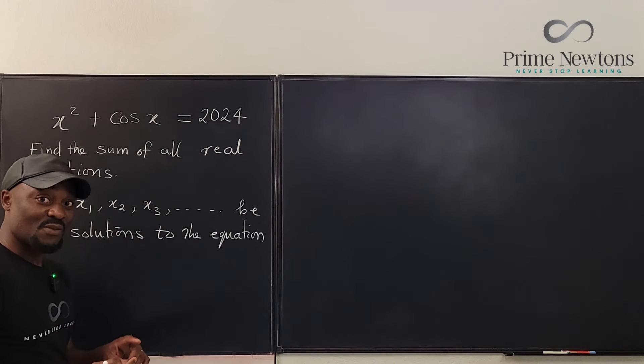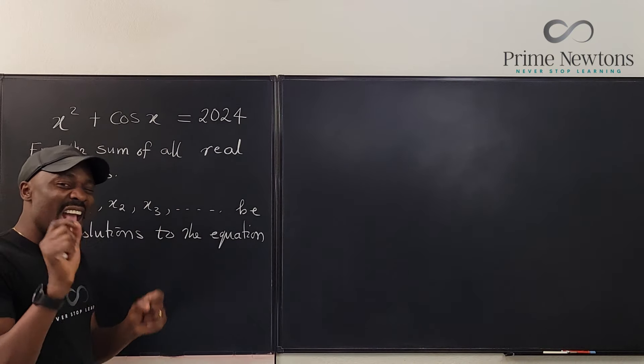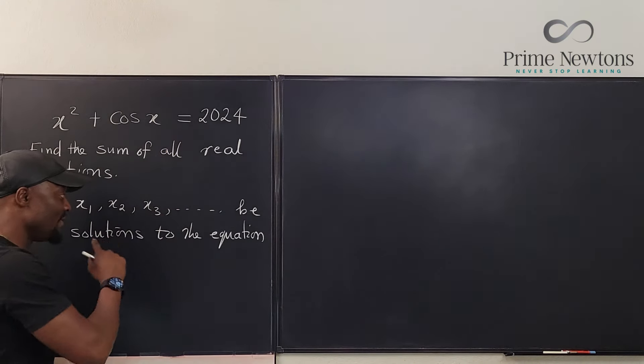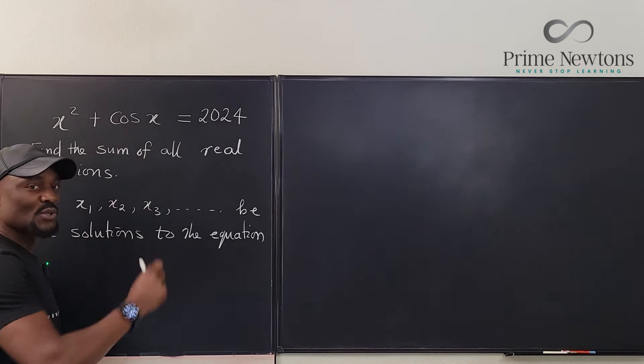Because x1 and x2 and x3 can satisfy this equation, the negative versions of these values will also satisfy the equation. Because this is even and this is also even.